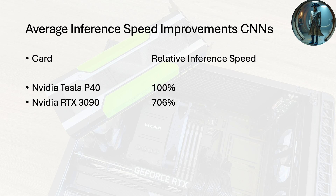The average inference speed improvements for CNNs are quite dramatic. Taking the P40 as our baseline, the 3090 achieves a staggering 706% relative inference speed — about seven times faster than a P40. This is a massive performance boost. So if you have the time to wait for your pictures, the P40 will still do the job, but the 3090 will just be much faster.